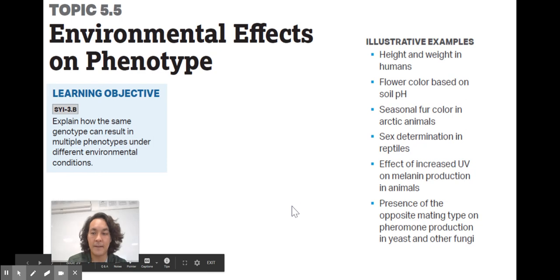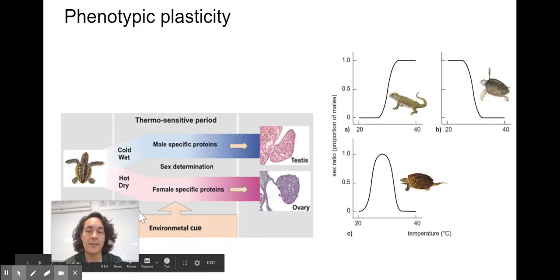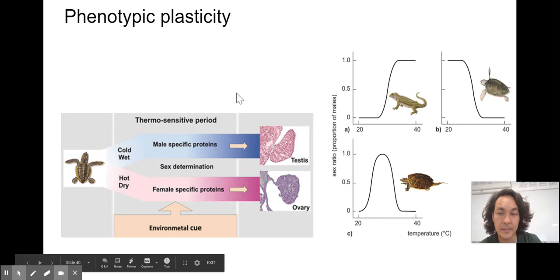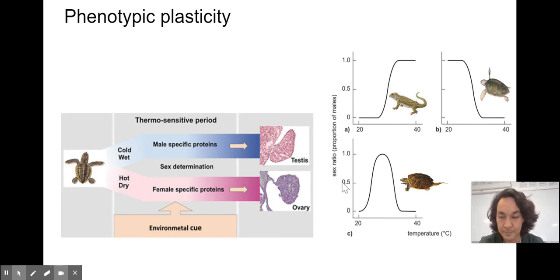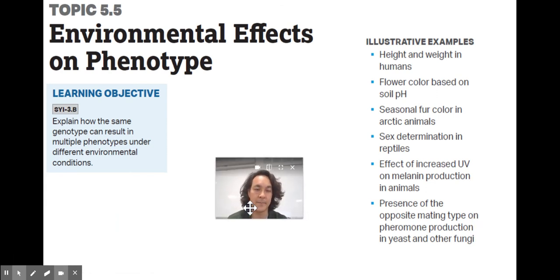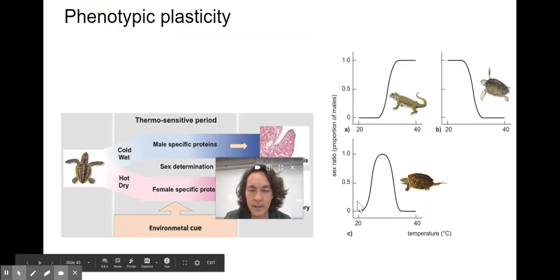All right, 5.5, environmental effects on phenotype. This is fascinating. And it really deals with phenotypic plasticity. And so, what I mean right here is that you have these genes, but they can be influenced by the environment. And so, here, you can see for these turtles, if it's really cold, they're more likely to develop as males. If it's warmer, certain proteins can be activated and they're more likely to develop as females. And so, here are a lot of illustrative examples. And I think the best way to do this, like flower color with hydrangeas, the Arctic fox, sex determination in reptiles, is to do a little bit of research and to just learn about this that way. Height and weight in humans, you might have the genes to be super tall, but if you don't have good nutrition, then you won't be able to realize your full height.